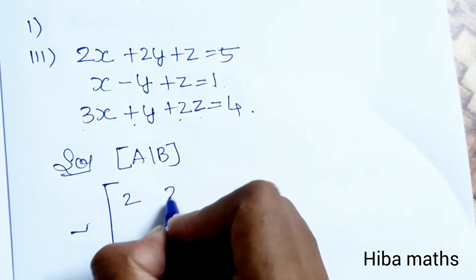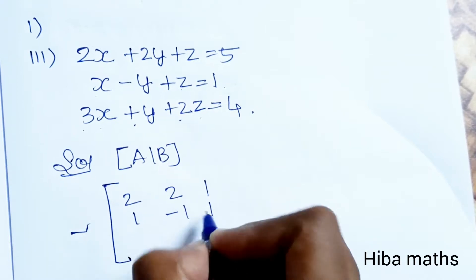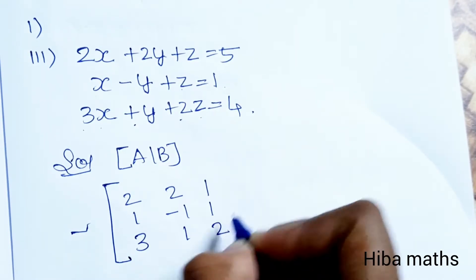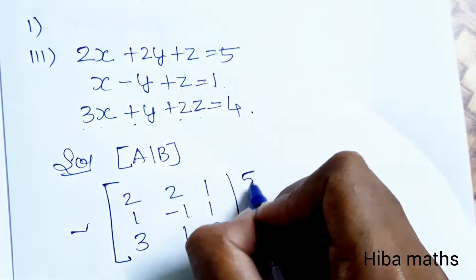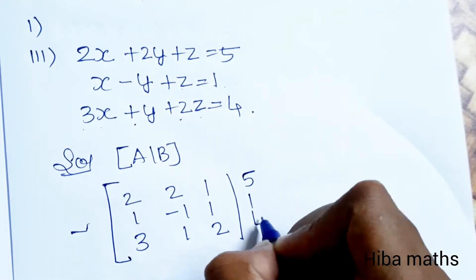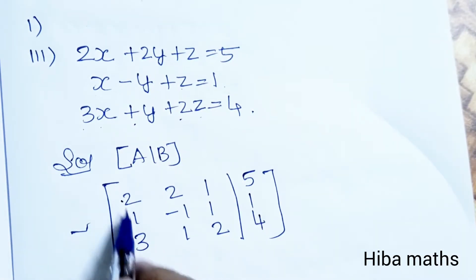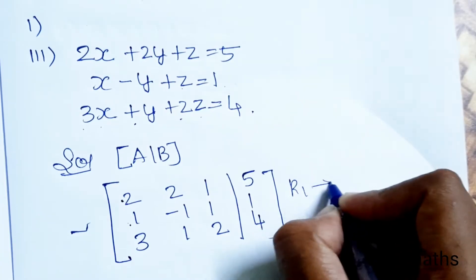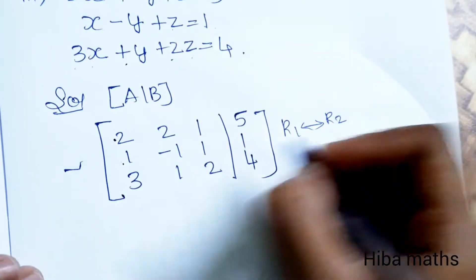The augmented matrix [A|B] is: row 1: 2, 2, 1 | 5; row 2: 1, -1, 1 | 1; row 3: 3, 1, 2 | 4. Since the first row first column element is not 1, we apply R1 ↔ R2 interchange.